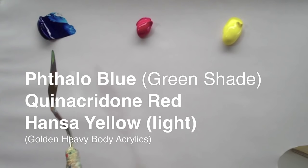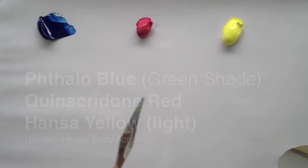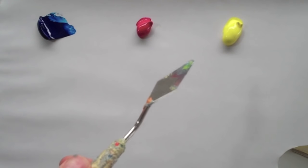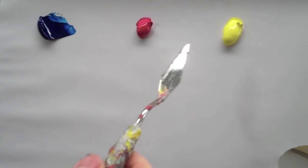Here we've got phthalo blue with a green shade, quinacridone red, and hansa yellow light version. Ideally to get the blackest black you could use hansa yellow medium, but this will get us pretty close.